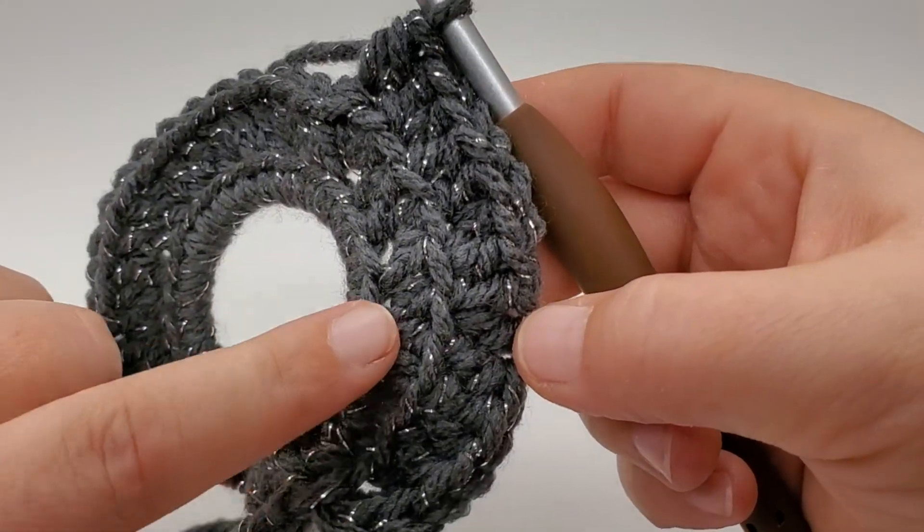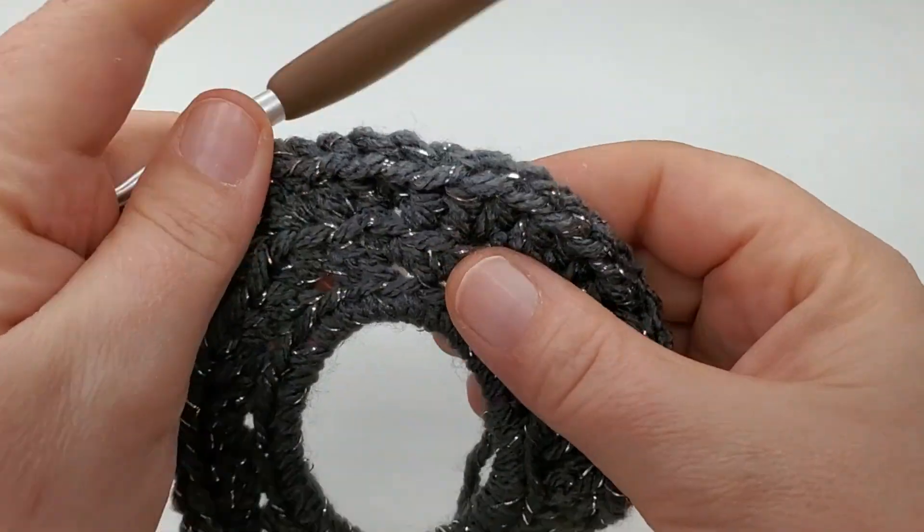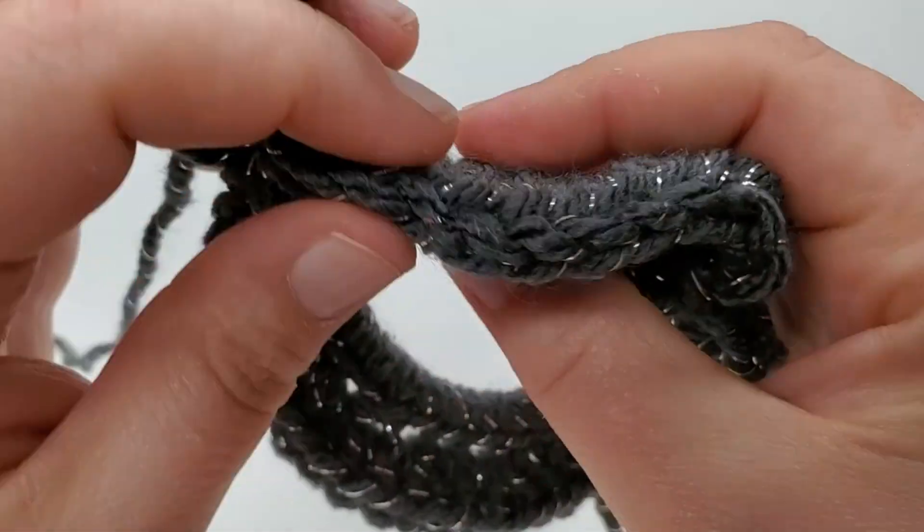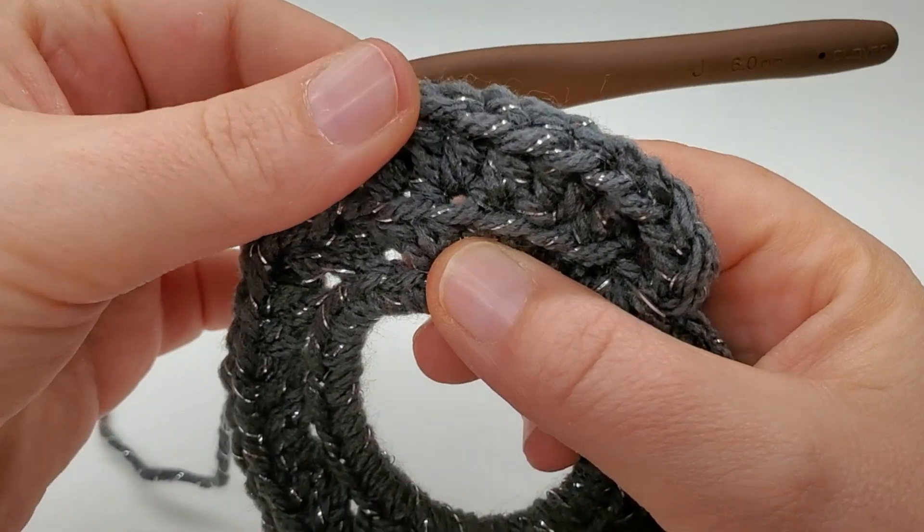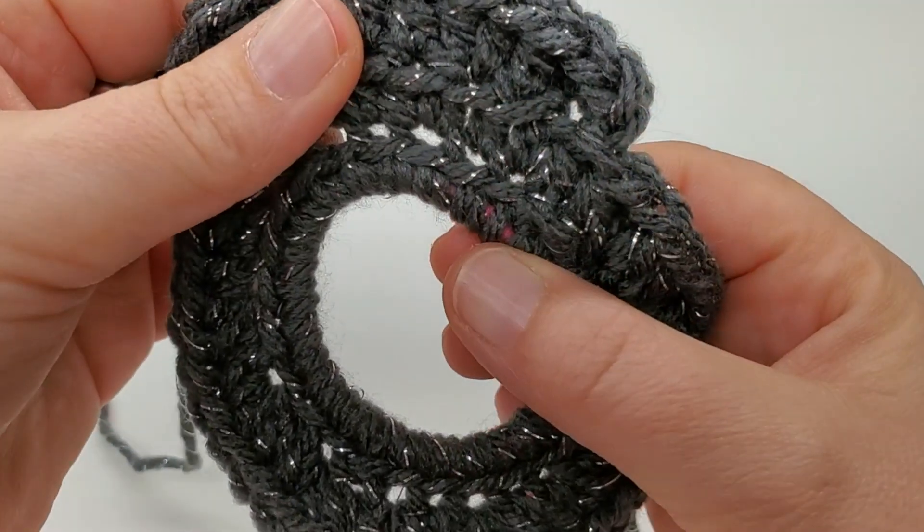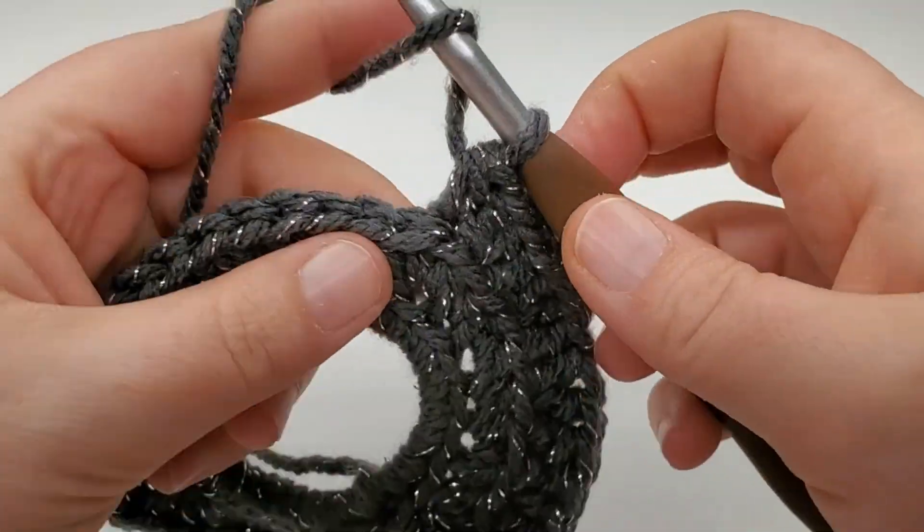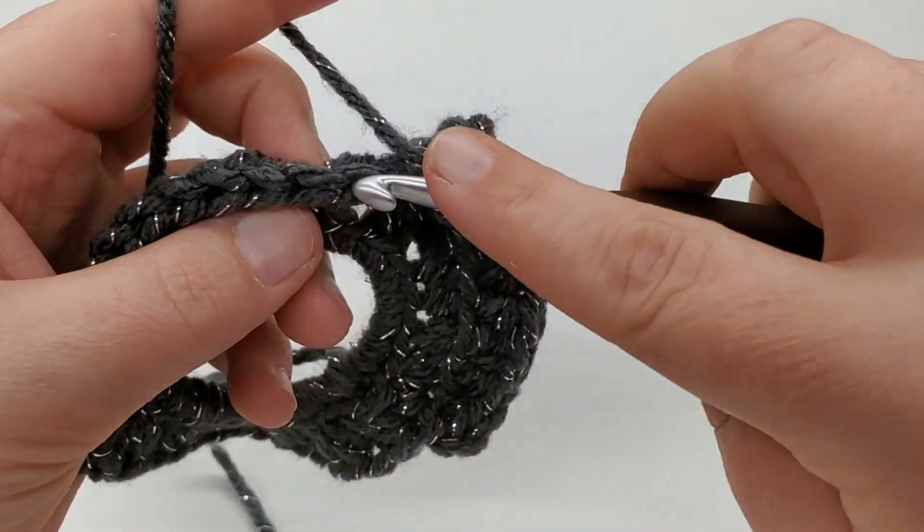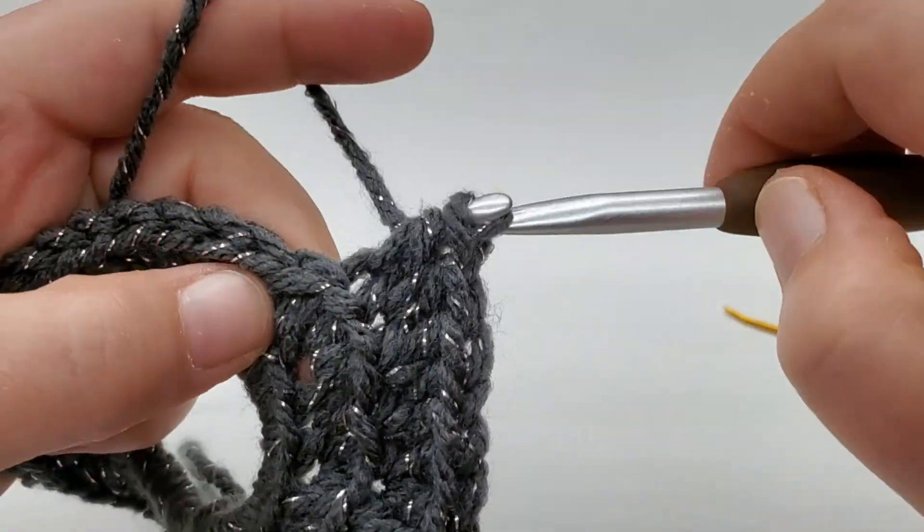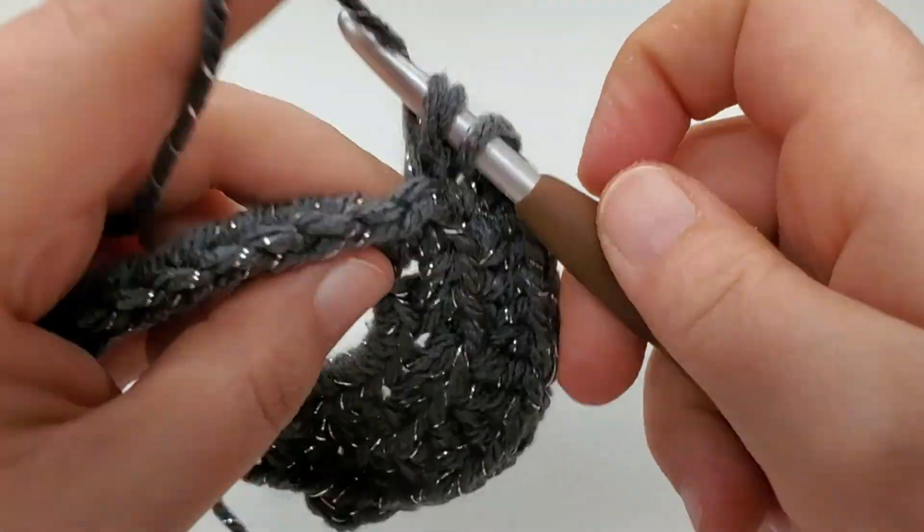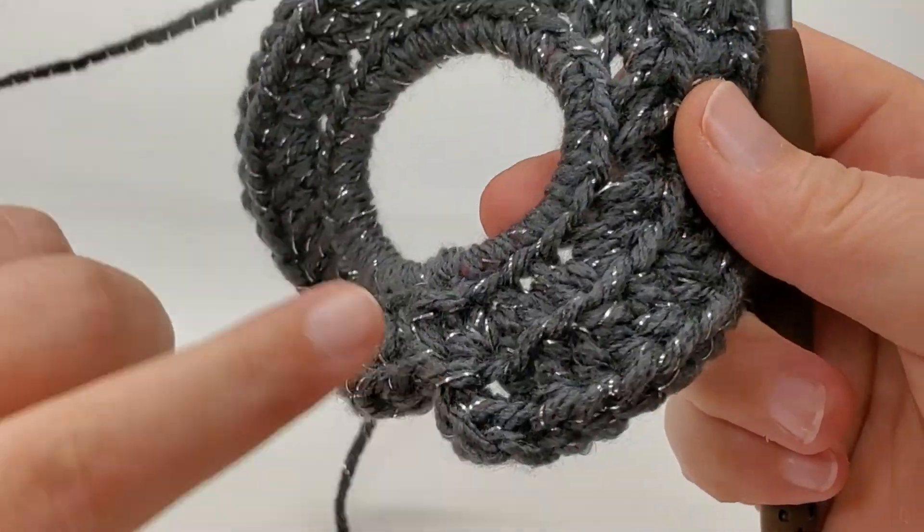Next one gets one. Next one gets two. One. And see how it's still forming our ridge. And it doesn't have that big gap. Like these do. So go ahead and work this all around. Where was I? One. Two. And I'll meet you back at the beginning.